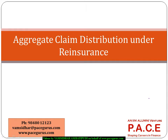Let's try to understand some important points relating to the aggregate claim distribution in case there is a reinsurance. Here, I would like to look at two major forms of reinsurance: one being the proportional form of reinsurance and the other one being the excess of loss. Though there are various other forms of reinsurance, let's try to understand from these two perspectives.